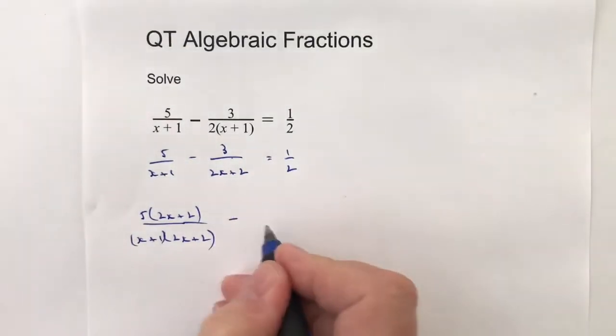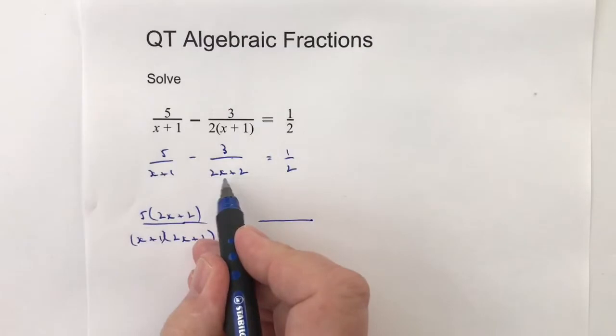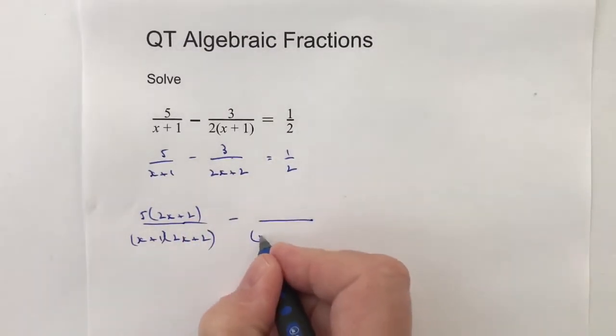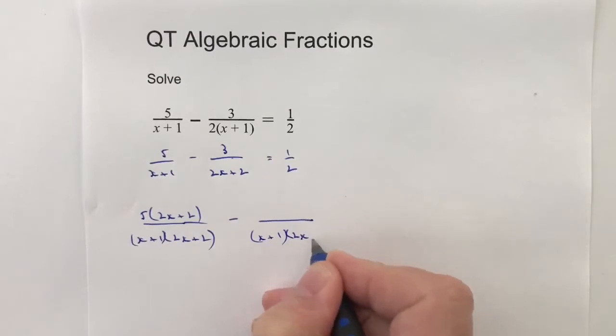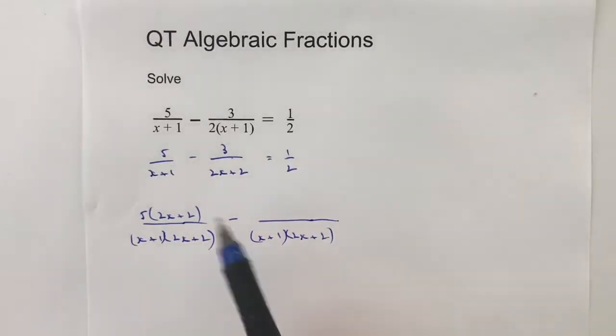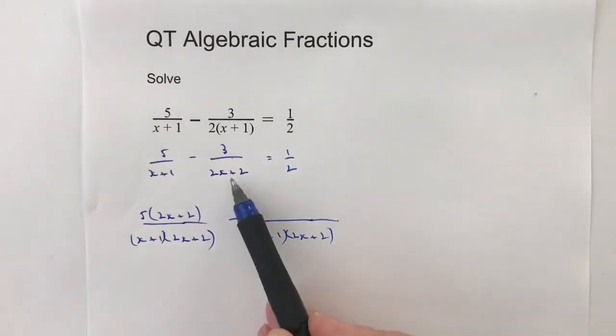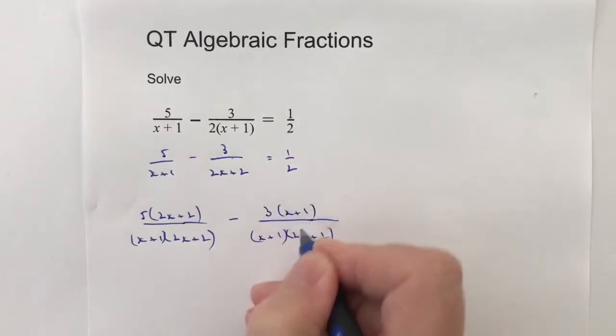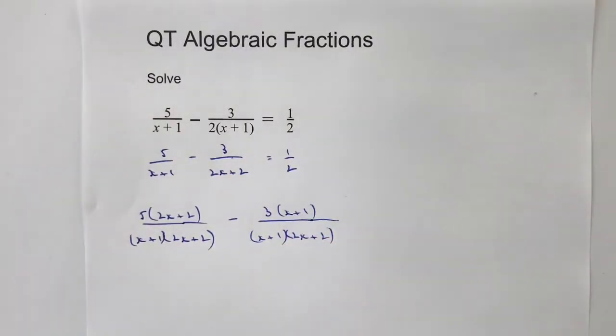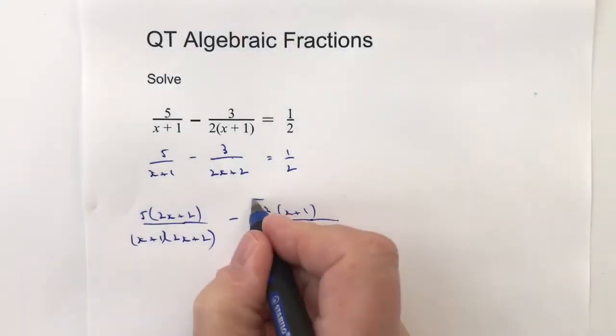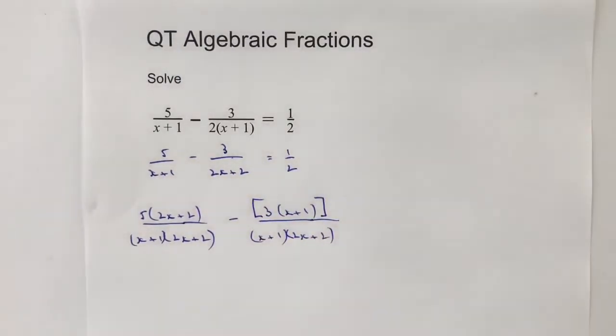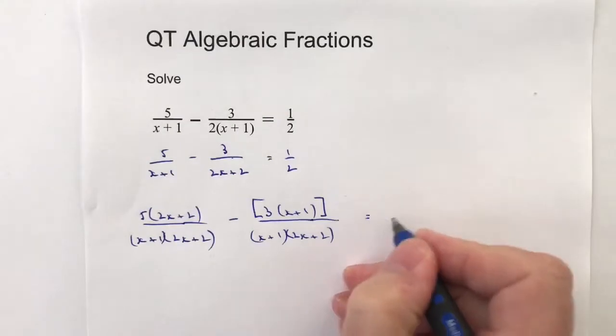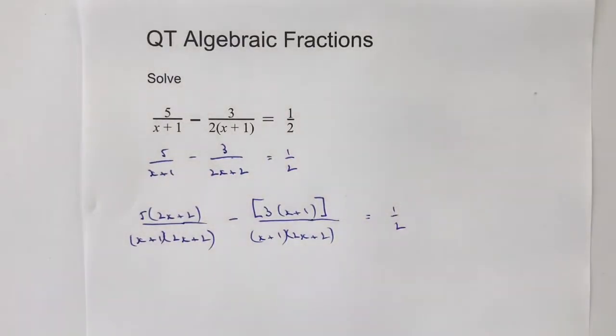Then I'm going to minus and I've got to have the same exercise with this fraction so the bottom is going to become x plus 1 times 2x plus 2 but because I've multiplied the bottom by x plus 1, I have to multiply the top by x plus 1 and that would be that one. Now we've got to be a little bit careful here because of this negative sign. So what I'm going to do is I'm just going to remind myself by putting in square brackets that I've got to do something with that negative sign and that's going to be equal to a half. Let's carry on and see if we can develop this a little bit further on.